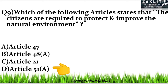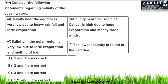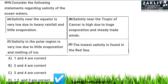The final question asked to consider statements regarding the salinity of ocean water and choose the correct option. Knowing that the Red Sea has high salinity, option D — which states that the lowest salinity is found in the Red Sea — is totally wrong and can be eliminated. Since options A, B, and C each include statement four, the correct answer is option D: statements one, two, and three are the correct statements regarding salinity of ocean water.